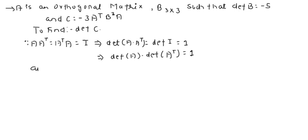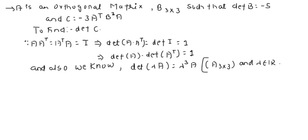And also we know this property that determinant of lambda times a matrix is equals to lambda cube times determinant of A, where A is a 3 by 3 matrix and lambda is a real number. So this is the property that we can use. Now let's see how can we do this.